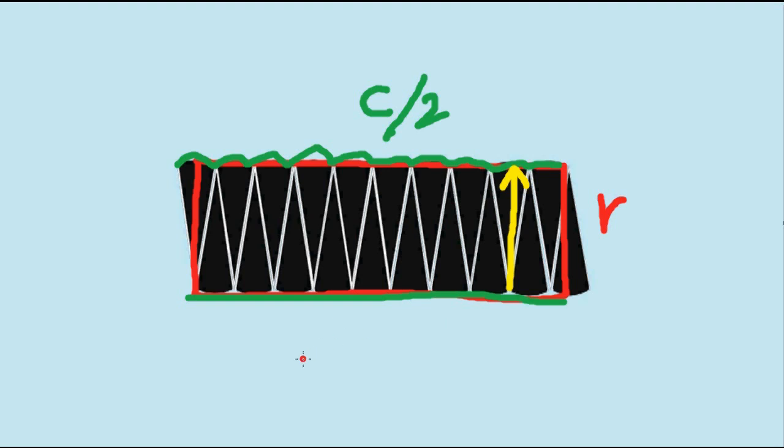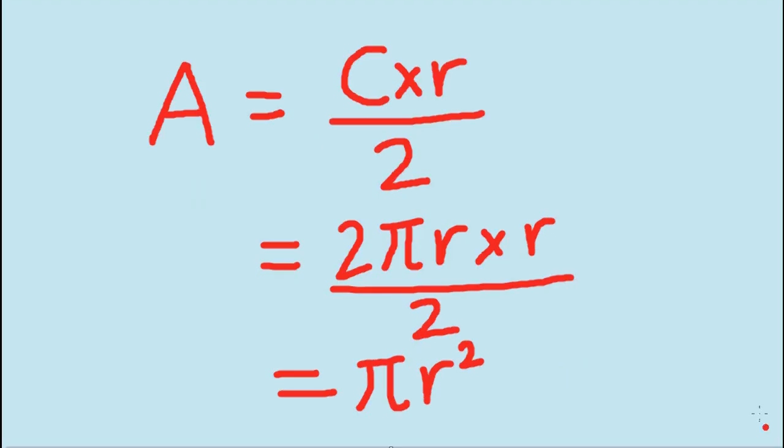So now we get our relation between the area and the circumference. We get C divided by 2 multiplied by R equals the area of the circle. That is, area equals circumference multiplied by radius divided by 2.